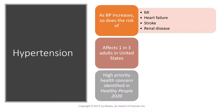As blood pressure goes up, so does risk for myocardial infarction, heart failure, stroke, and renal disease. The heart is a muscle made of cells that can weaken, and it also has an electrical conduction system we can assess through an ECG (electrocardiogram). One out of every three adults in the United States has hypertension, and it has always been a top priority for public health.